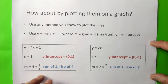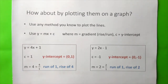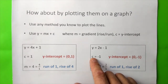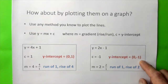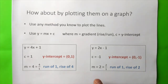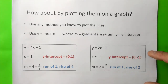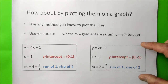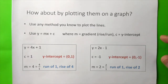Similarly, for y equals 2x minus 1, c is minus 1, and therefore the y-intercept is (0, minus 1). m is 2, which is 2 over 1, giving a run of 1 and rise of 2. Based on this information, I can plot the graph.